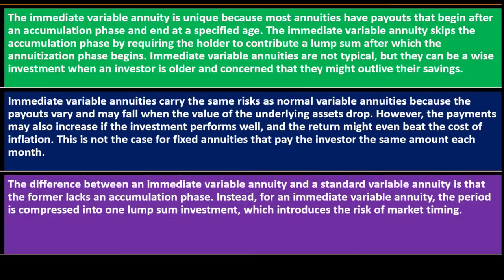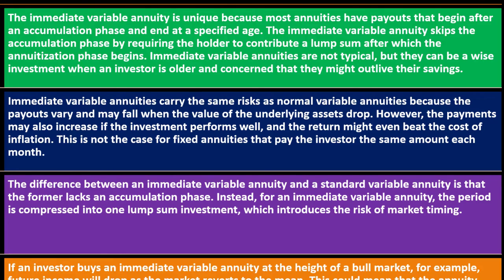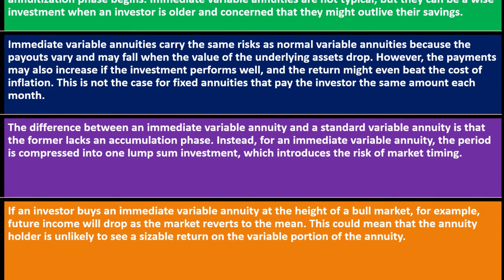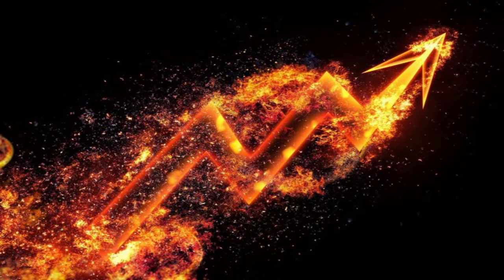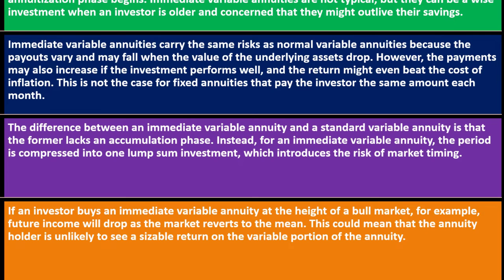The difference between an immediate variable annuity and a standard variable annuity is that the former lacks an accumulation phase. Instead, the period is compressed into one lump sum investment, which introduces the risk of market timing. If the investor buys an immediate variable annuity at the height of a bull market, for example, future income will drop as the market reverts to the mean — the market was overheating and would be expected to move back down.